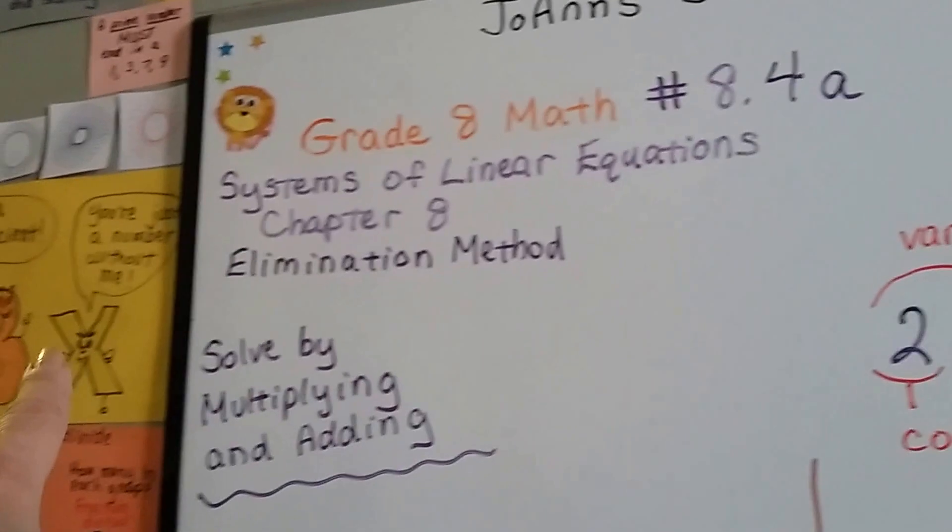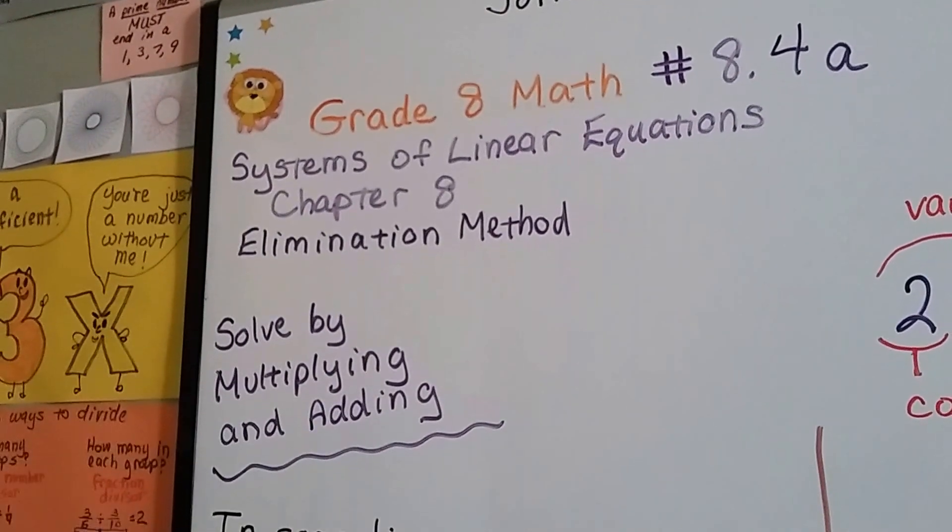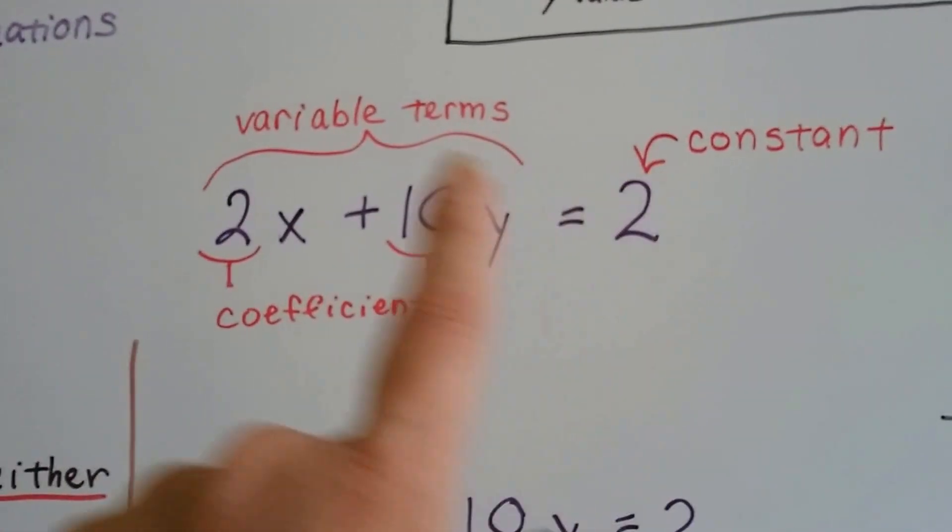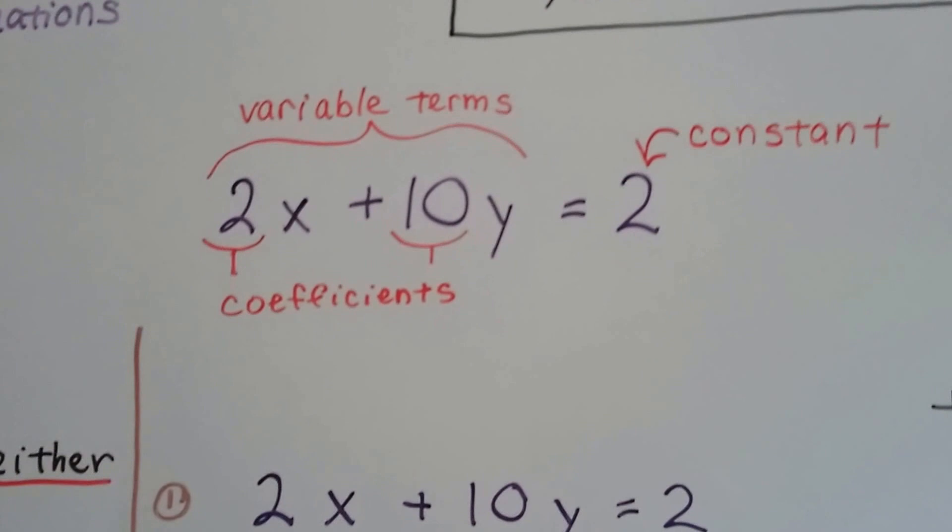Remember? The coefficient is the number in front of the variable. So these are the variable terms. We need to multiply every single term by a constant number.